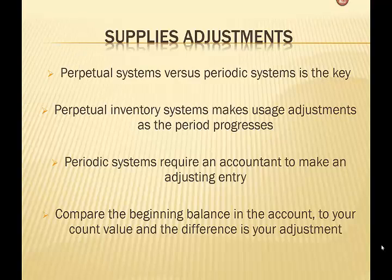To recap supplies adjustments: this is something that we have to do when we have periodic inventory systems. With perpetual inventory systems, we don't have to worry about this nearly as much, because they make usage adjustments as the period progresses, so we don't have to necessarily have someone manually do that. But a periodic system will require an accountant to actually make an adjusting entry. You compare the beginning balance to your account value, and the difference is your adjustment. We'll talk to you later. Thank you.